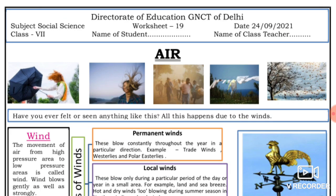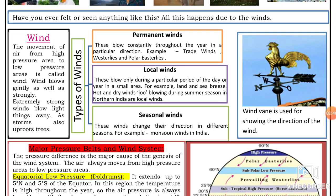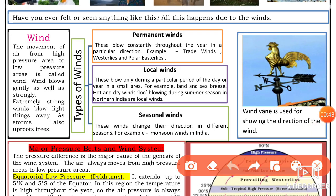What is wind? When air moves from a high pressure area into a low pressure area, we call it wind. Wind can blow gently as well as strongly — extremely strong winds blow light things away, cause storms, and uproot trees.